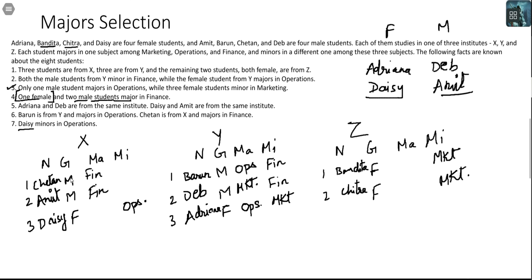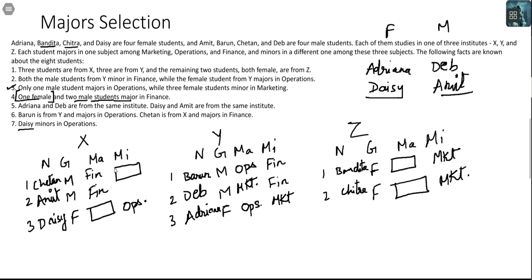The things I still don't know: one female was supposed to major in Finance. Among Daisy, Bandita and Chitra, one of these three will major in Finance. I also don't know what Chetan minors in or what Amit minors in.